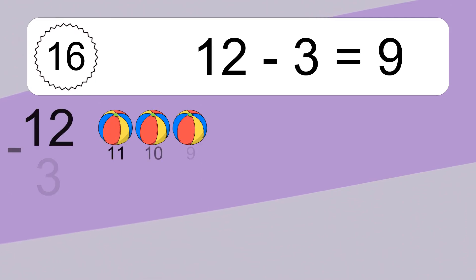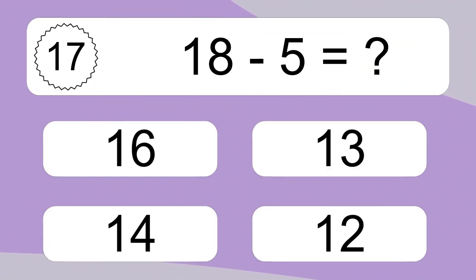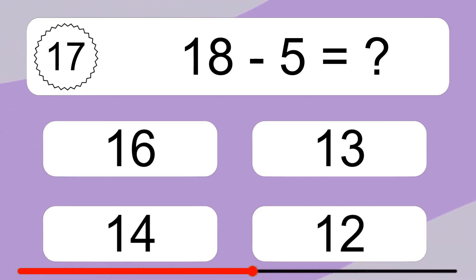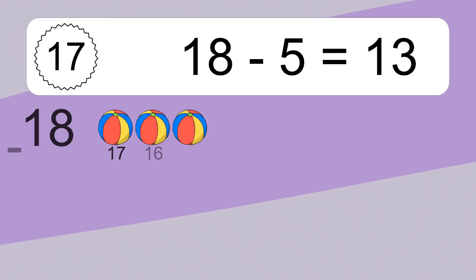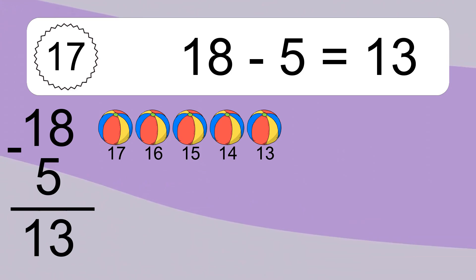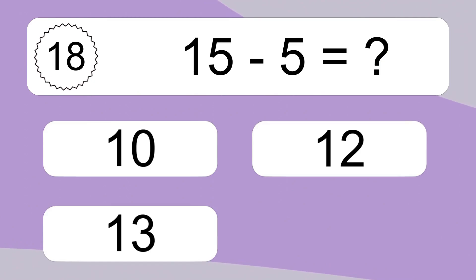12 minus 3 equals what? 12 minus 3 equals 9. Let's count it. 11, 10, 9. 18 minus 5 equals what? 18 minus 5 equals 13. Let's count it. 17, 16, 15, 14, 13.